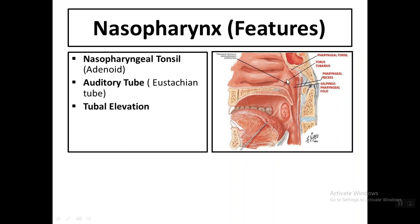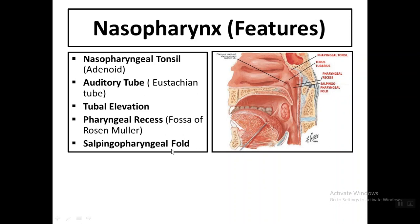We have the tubal elevation, caused by the cartilaginous part of the auditory tube projecting into the nasopharynx. Behind this elevation is the pharyngeal recess, also called the fossa of Rosenmüller. We also have the salpingopharyngeal fold, formed by the salpingopharyngeus muscle, which runs from the auditory tube down to the pharynx.